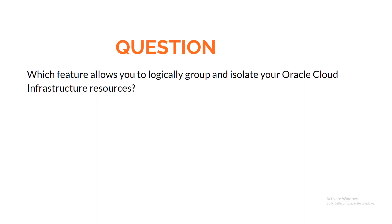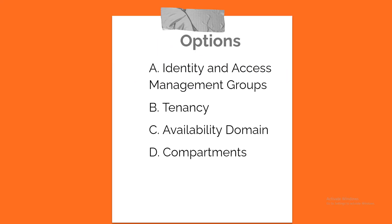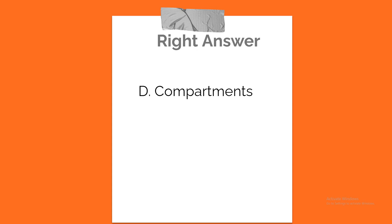Question. Which feature allows you to logically group and isolate your Oracle Cloud Infrastructure resources? A. Identity and Access Management Groups. B. Tenancy. C. Availability Domain. D. Compartments. Correct answer: D. Compartments.